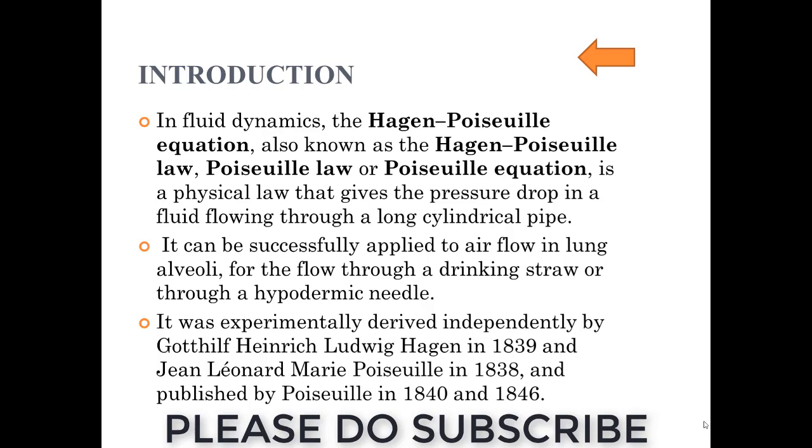The Hagen-Poiseuille equation is a physical law that gives the pressure drop in a fluid flowing through a long cylindrical pipe. In this law we will take a laminar flow for a tube, below 2300 Reynolds number it is a laminar flow. Above 2300 it is a turbulent flow.